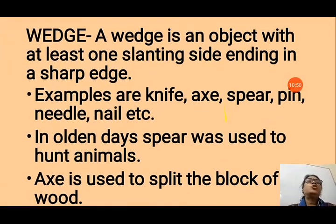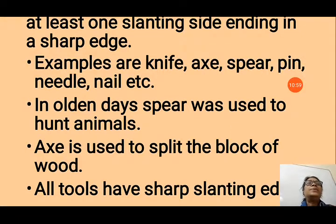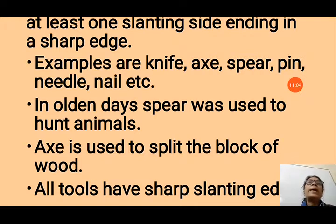Wedge is also a kind of simple machine. A wedge is an object with at least one slanting side ending in a sharp edge. Examples include a knife, axe, spear, pin, needle, nail, and others — they all have sharp edges and are called wedges.